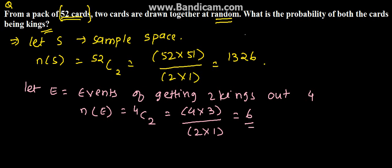So n(E) here we have derived is 6. Now we need to find the probability of getting event E. So n(E) divided by n(S) is the probability of getting event E. This will be 6 divided by 1326 which equals 1 divided by 221.